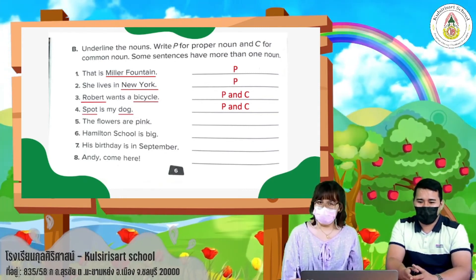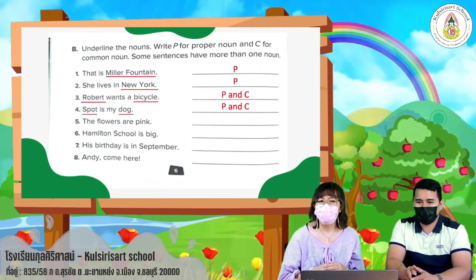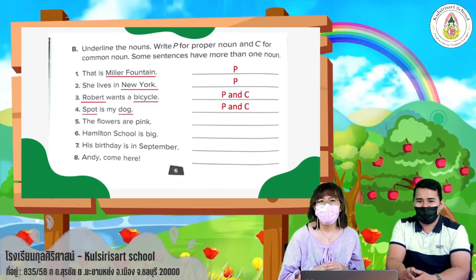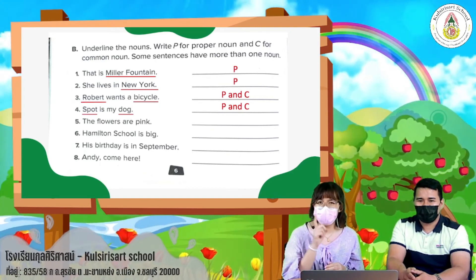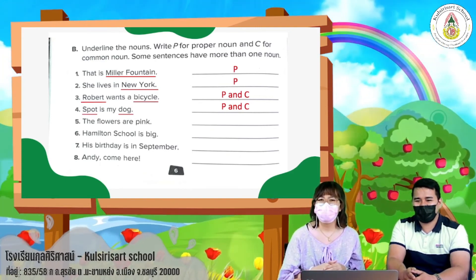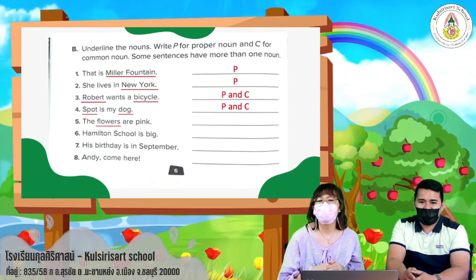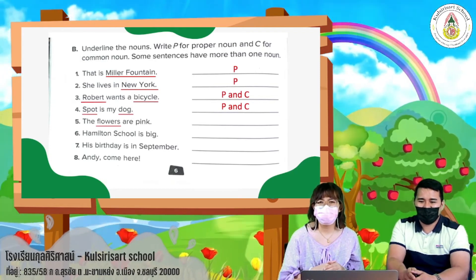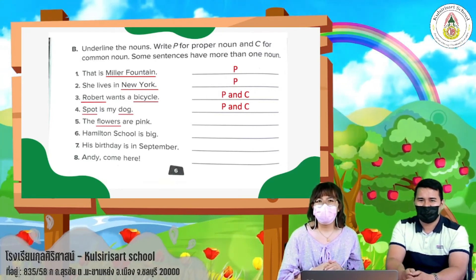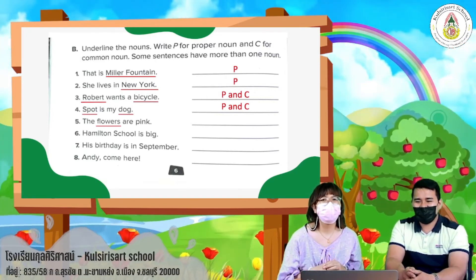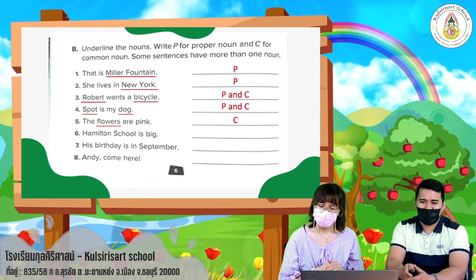Number five: 'The flowers are pink.' In this sentence we have one noun — flowers. Is it common noun or proper noun? It's a common noun. Write C on the blank.